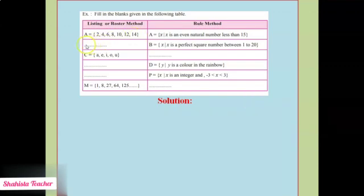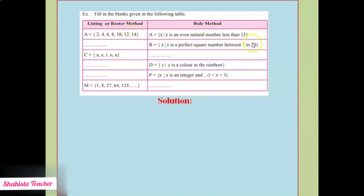Now the second question: here we have to find the listing or roster method. Our question is B = {x such that x is a perfect square between 1 to 20}. So here we have to find numbers which have a perfect square root between 1 to 20. We will not count 1. After 1: 2 squared is 4, 3 squared is 9, 4 squared is 16. So we will write B = {4, 9, 16}.